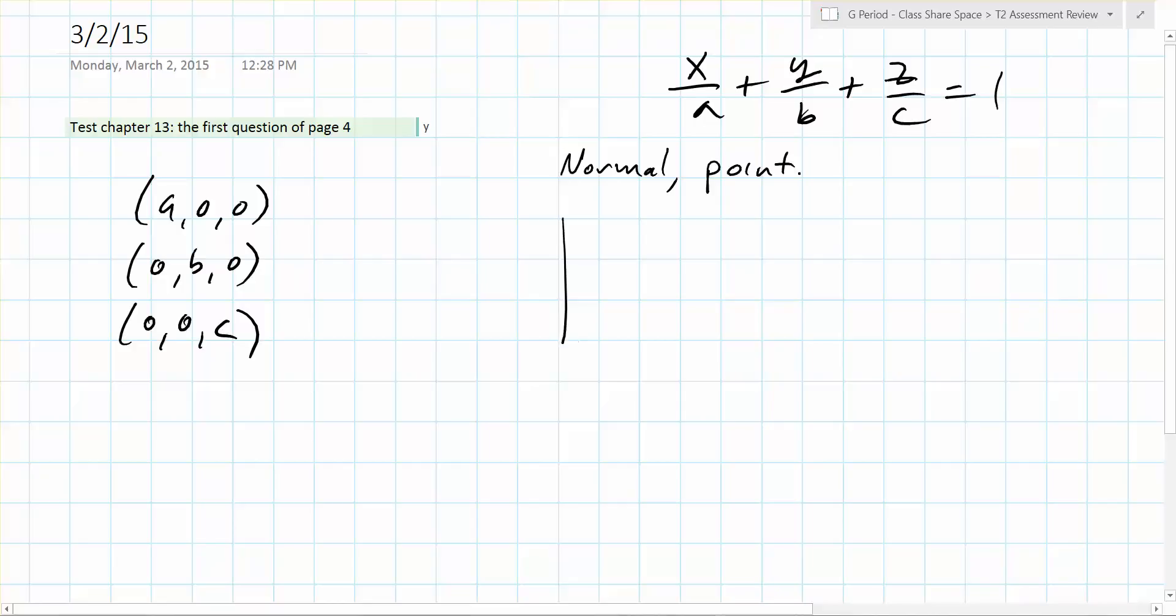So graphically, what are they telling you? That you have three intercepts here, here, and here. You have a, b, and c. So do we have a point? In fact, how many points do we have? We have three points.